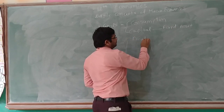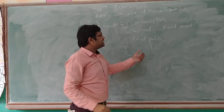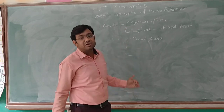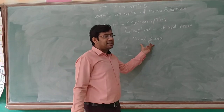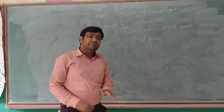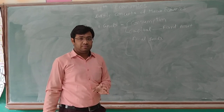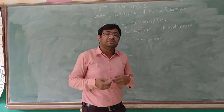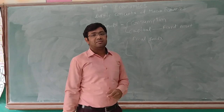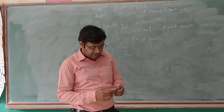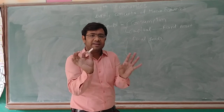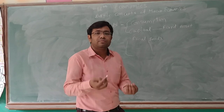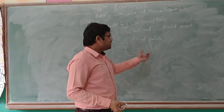The third type is final goods. Note that one commodity can be used interchangeably — it can belong to more than one category. Final goods are those goods which are beyond the production boundary, meaning the commodity is outside the production boundary and we are not going to increase any type of utility in that commodity. For example, this chalk — I am just going to use it. I am not going to modify it. That is a final good.